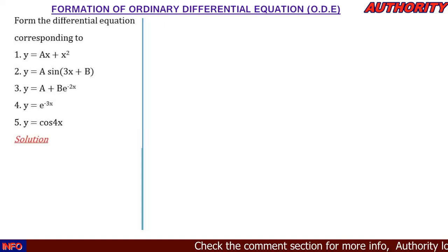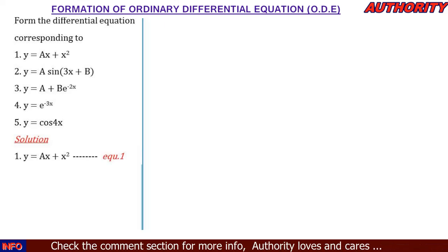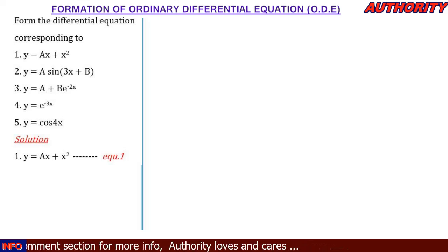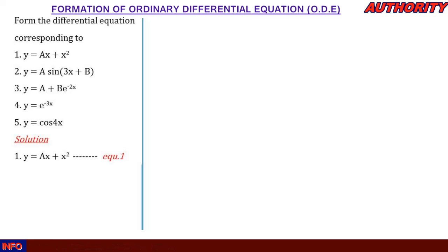Please watch carefully and pay attention — it's very simple and it's going to help you. For number one, y = ax + x². Here we have only one constant, so we are going to differentiate just once and then try to remove the constant 'a'.